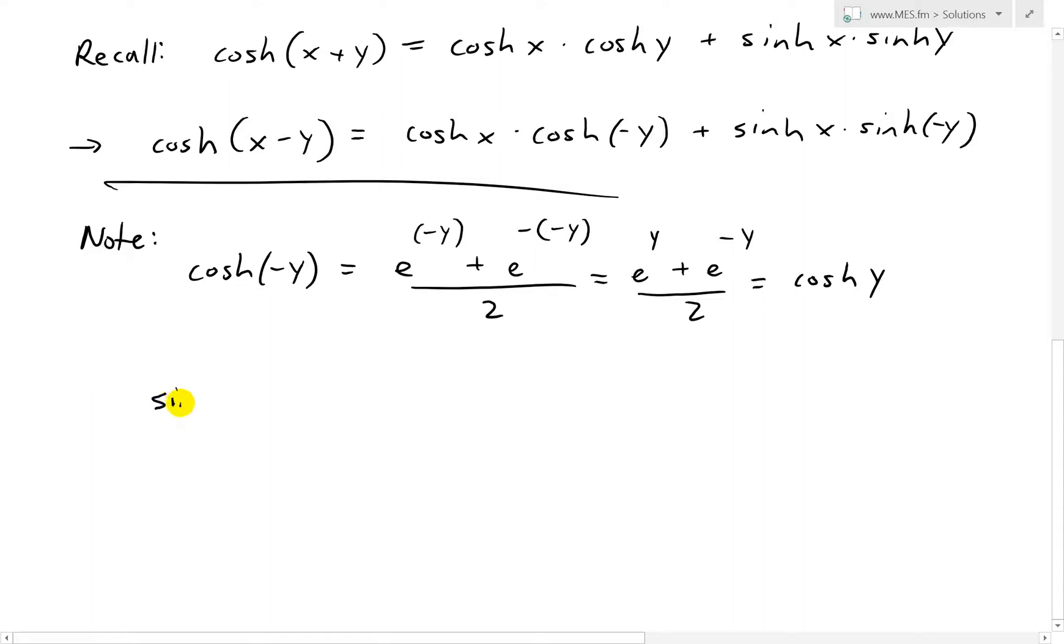And also for sinch of negative y, plug this into the definition. This equals to e to the power of negative y minus e to the power of negative negative y over 2. What this equals to is now what we have is this is a negative.